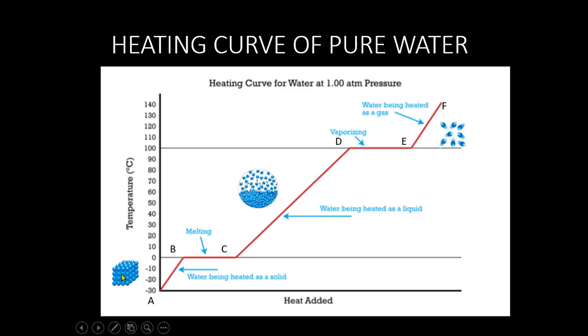So let's go through each point in this graph. At point A, we have our solid, which is ice. At point A, the temperature is below zero degrees and time is zero. So once we start heating, we're going to start timing. Once we start heating, the temperature of the solid will begin to heat up. Increasing the heat energy increases the vibrations of the particles in the ice, so the temperature will increase.